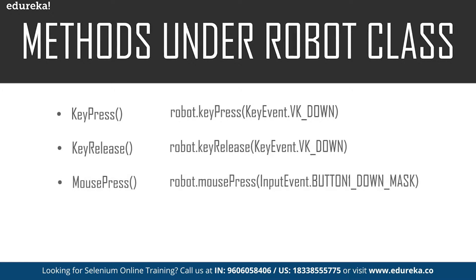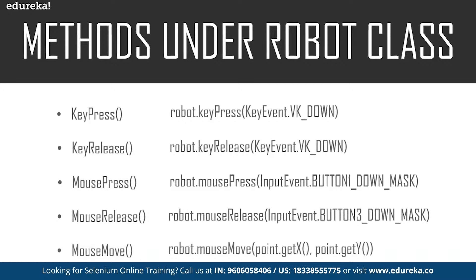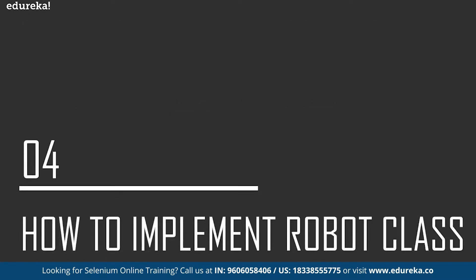Now let's take a look at the methods used to handle the mouse functions. We have the mousePress method, which is used to press the left button of the mouse. Then we have the mouseRelease method, which is used to release the pressed button of the mouse. Last, we have the mouseMove method, which will move the mouse pointer to the X and Y coordinates. The command goes: robot.mouseMove and specify the coordinates of the X axis and Y axis. These are the methods that control the mouse and keyboard functions.